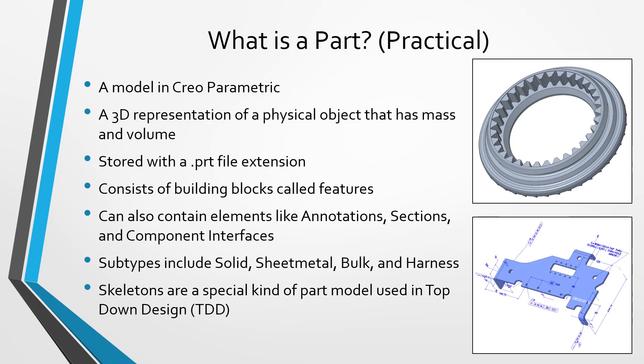There are also bulk items. Bulk items represent things that you want to appear in your bill of materials but you're not physically going to model. Those include things like paint, lubricant, or glue. You're not going to model it up with any geometry, but you want it represented in the assembly.